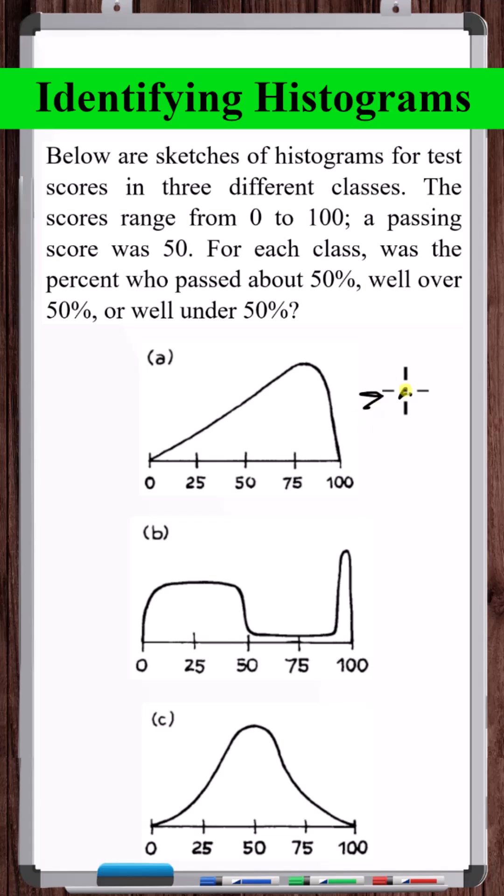Here is almost an even distribution across all scores, which means on average about 50% passed.